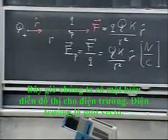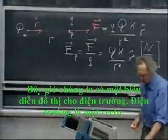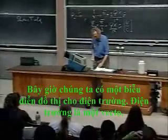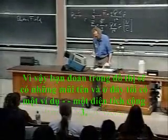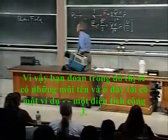Now, we will do graphical representations for the electric field. Electric field is a vector, so you expect arrows.